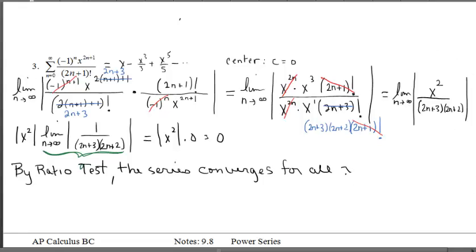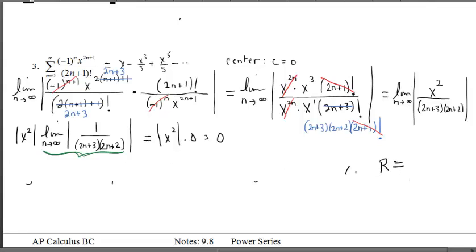So don't get confused with the radius of convergence equals 0 and all that stuff. Just think about what's happening here. In the ratio test, we got 0. So that tells us that our radius of convergence is infinity. Convergence for all x. So that tells us that our interval of convergence is going to be all real numbers.